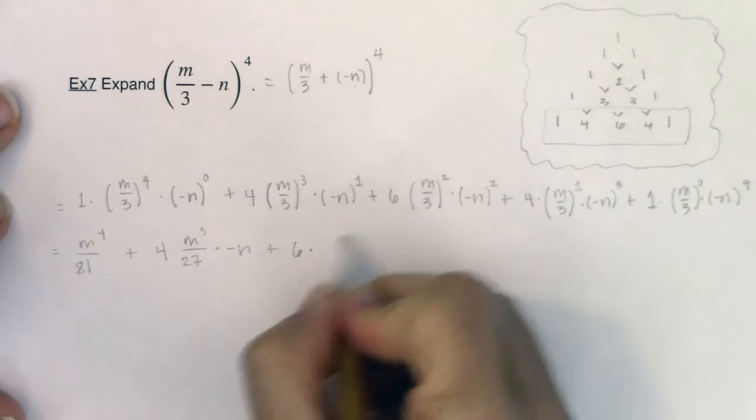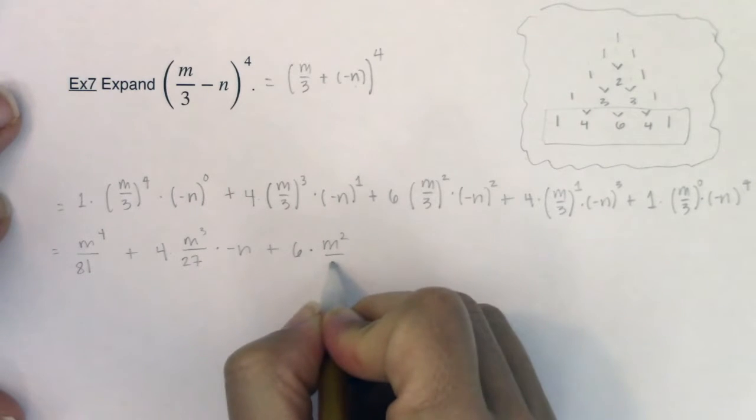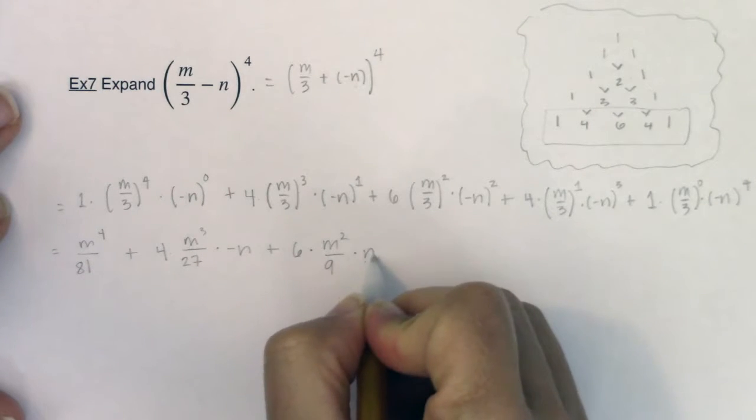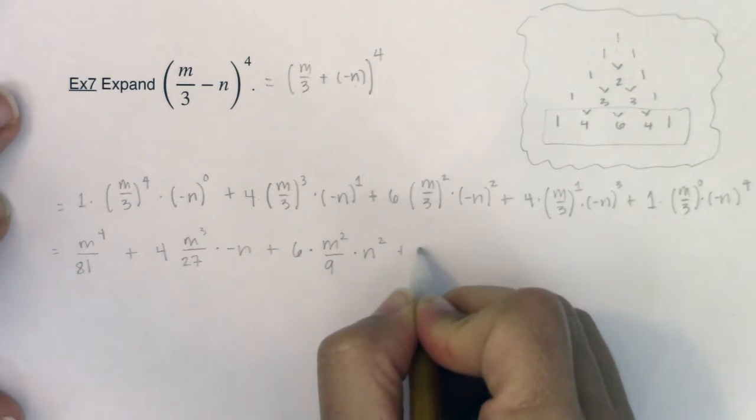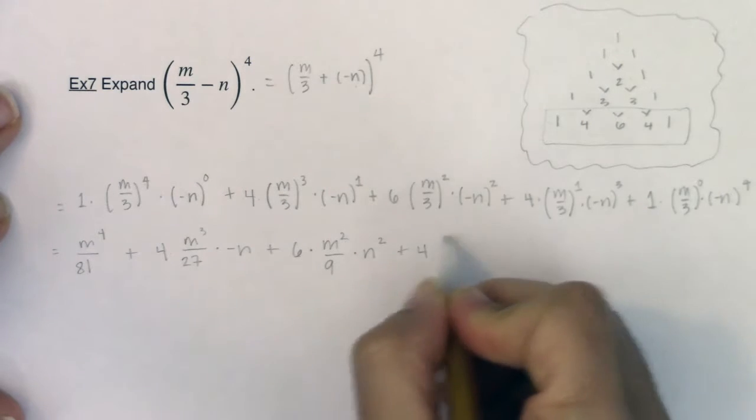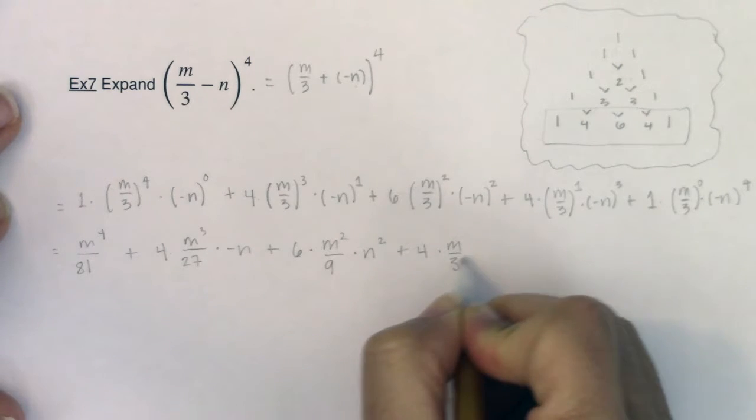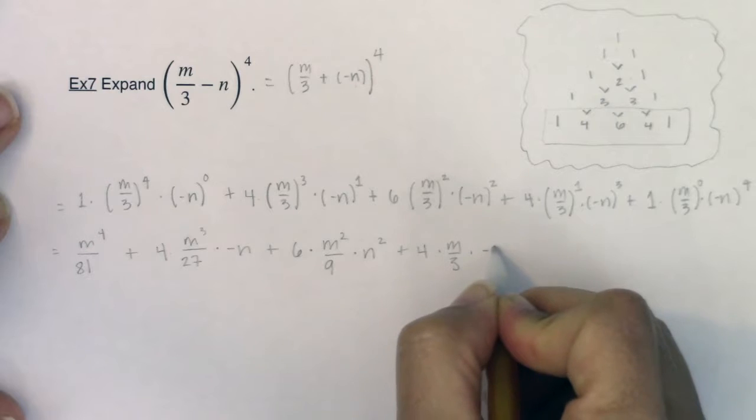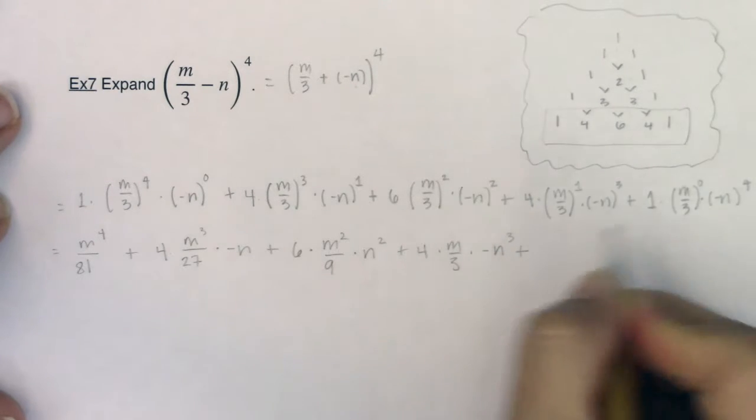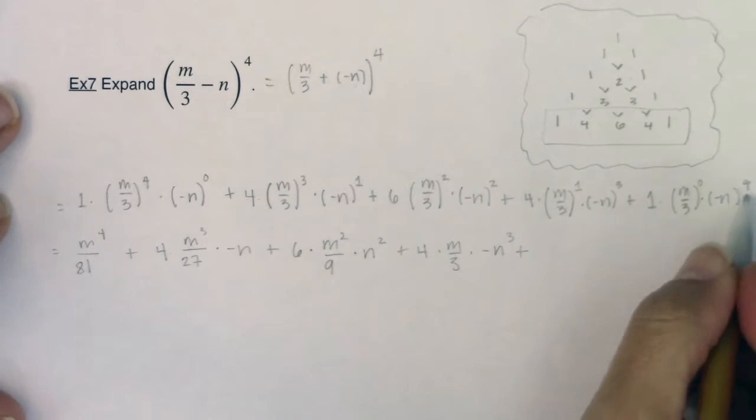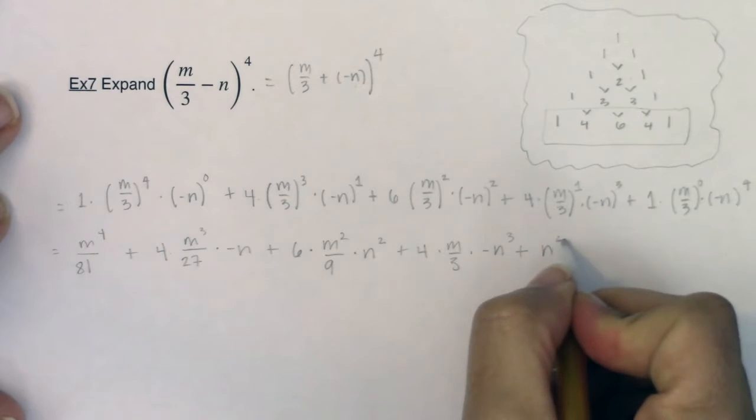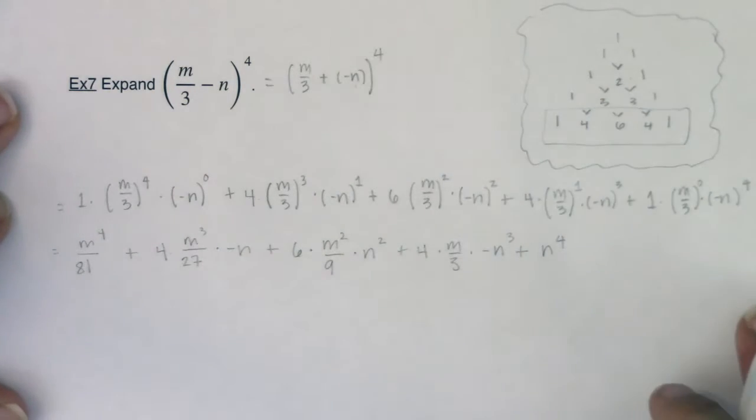Okay, plus a 6 times, well, this will be m squared over 9 times n squared. And then we've got 4. This is just going to be times m over 3. And this is going to be negative n cubed. And then last but not least, when we have negative n to the fourth, that's just going to be ultimately positive n to the fourth.